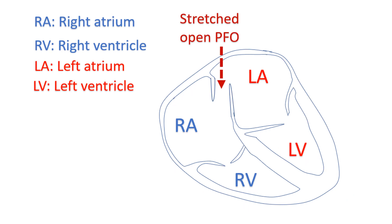Another situation is a stretched open PFO. When the pressure in the right or left atrium rises significantly due to another disease, the atrium enlarges and stretches the wall between the two atria along with it. When the PFO is stretched, blood can flow either way depending on which side has the higher pressure. If it is the left atrium which is enlarged, the stretched open PFO will shunt blood in a left-to-right direction, and vice versa.